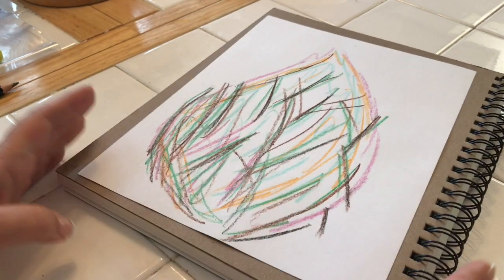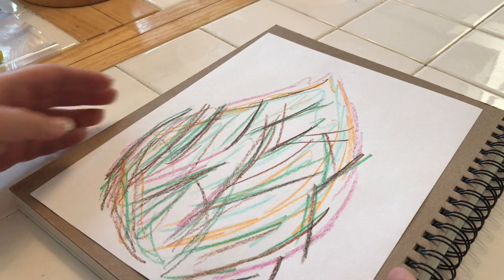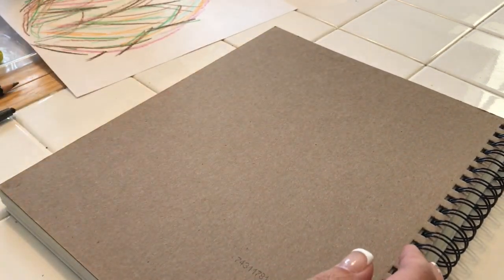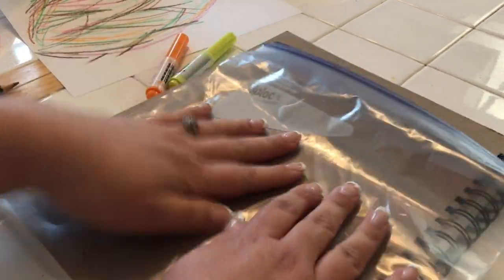All right, so I think that's it. And to get the watercolor effect, you will need to get a large Ziploc gallon bag. It doesn't need to be split or anything. Just take it out. Place it on top of your surface.